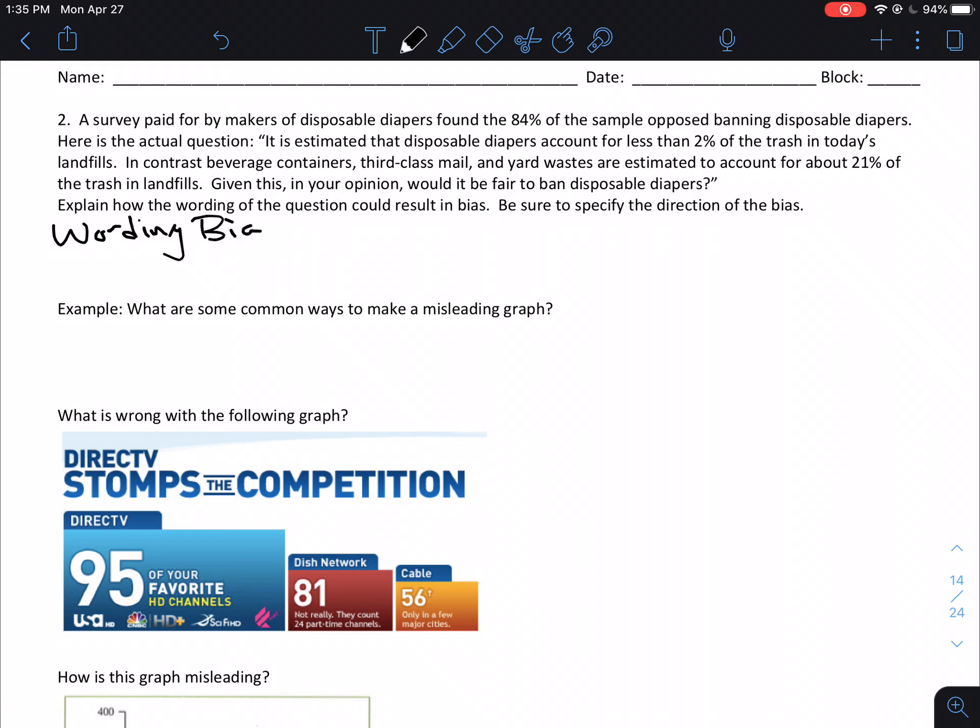So this is where we're talking about wording bias. And it already kind of told us that. So let's talk about how that is apparent in this example. So I think that the biggest thing on this is their comparison to the other containers. So the comparison to other waste I think is where this question becomes kind of a little bit unfair.